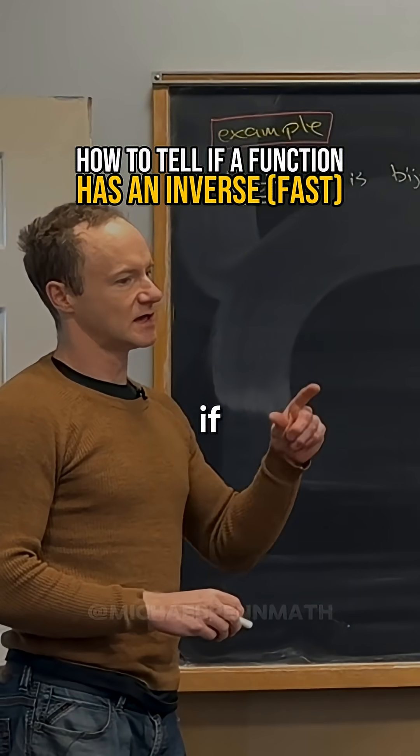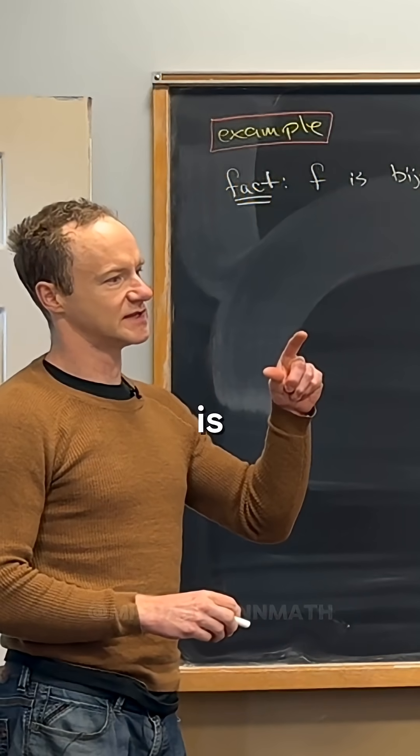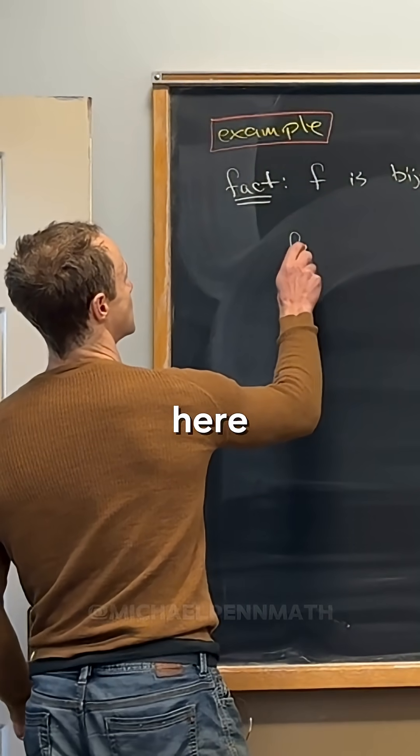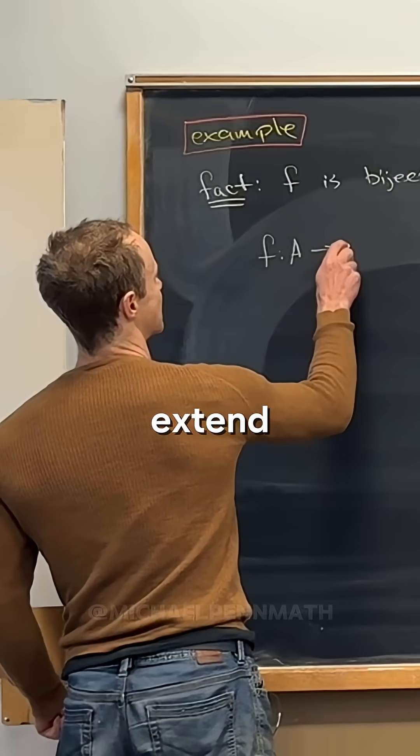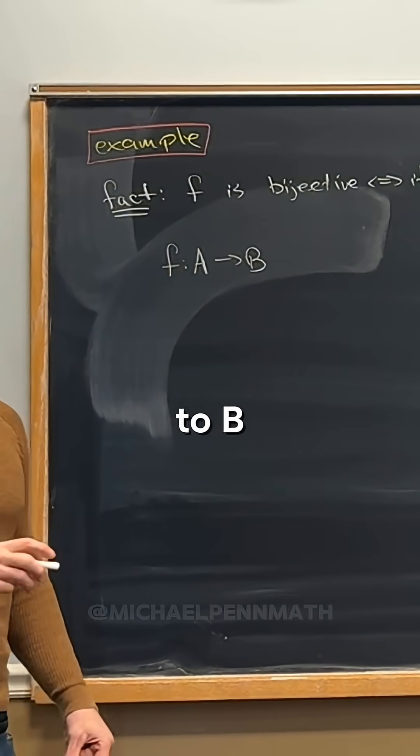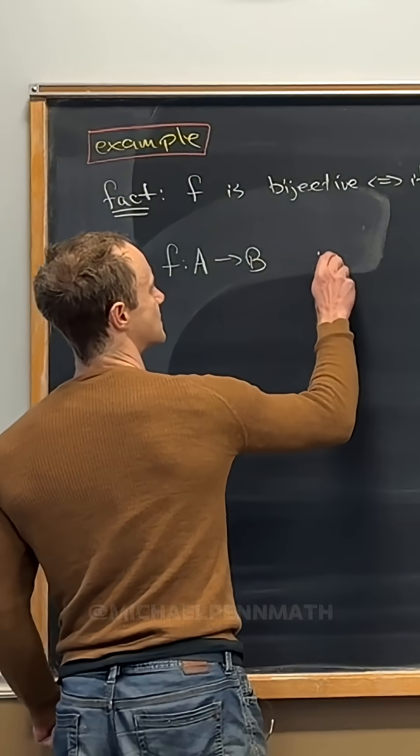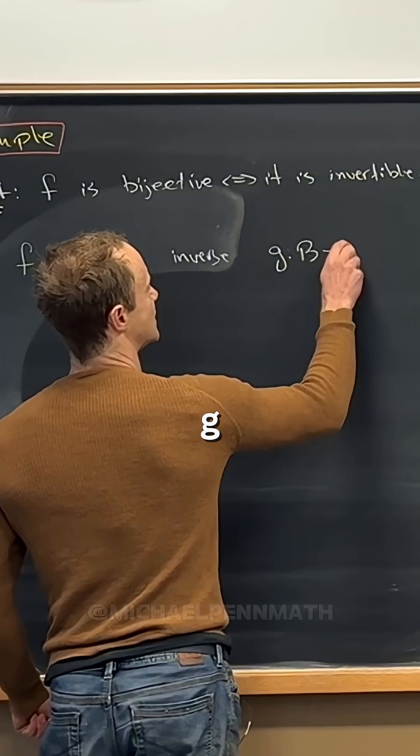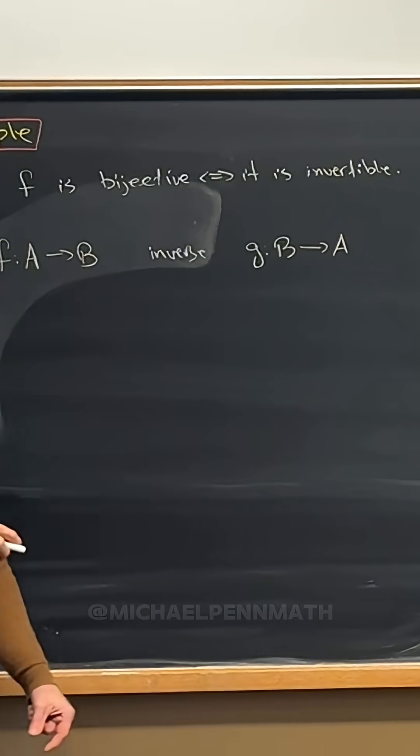So you can think of this like if a function is surjective. So here you can actually extend this a little bit. Let's say we've got f from A to B, then any inverse would be g from B to A.